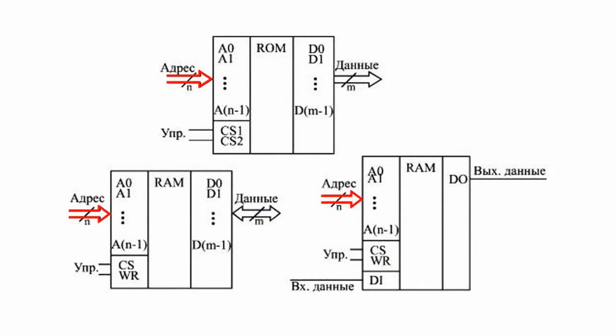In a general case, any memory chip has the following information outputs. Address — incoming outputs that form the memory address bus. The code on address lines is represented by a binary memory cell number that has been addressed at the given moment. The number of address bits determines the number of memory cells: if there are n address bits, the number of memory cells equals 2 to the nth power.